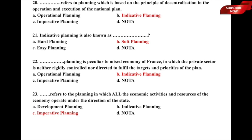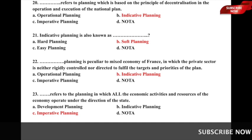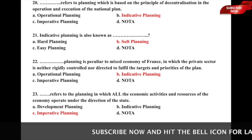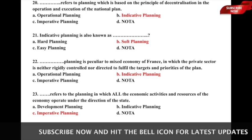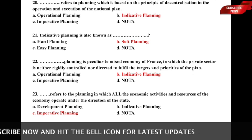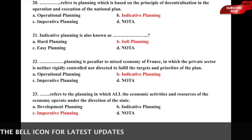Question 22: Dash planning is peculiar to the mixed economy of France, in which the private sector is neither rigidly controlled nor directed to fulfill the targets and priorities of the plan — whether it is a) operational, b) indicative, c) imperative, or d) none of the above. The correct answer is option b) indicative planning.